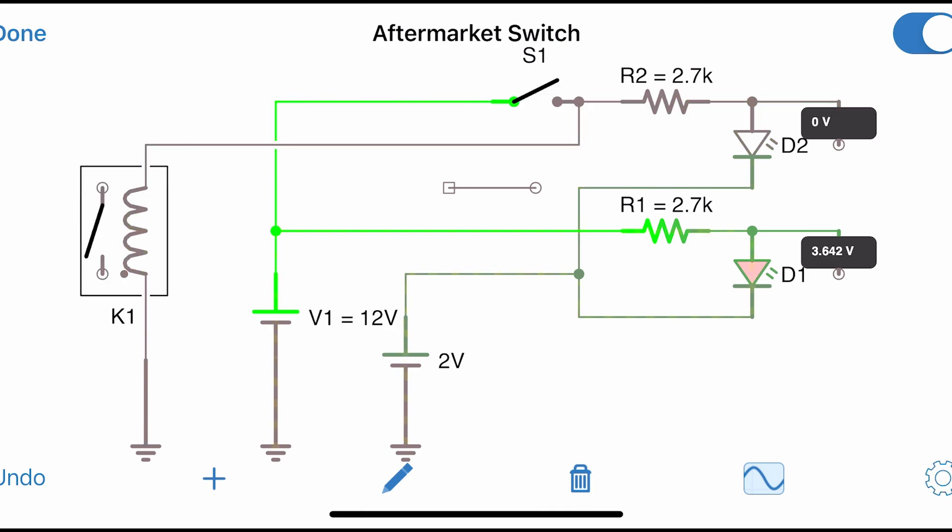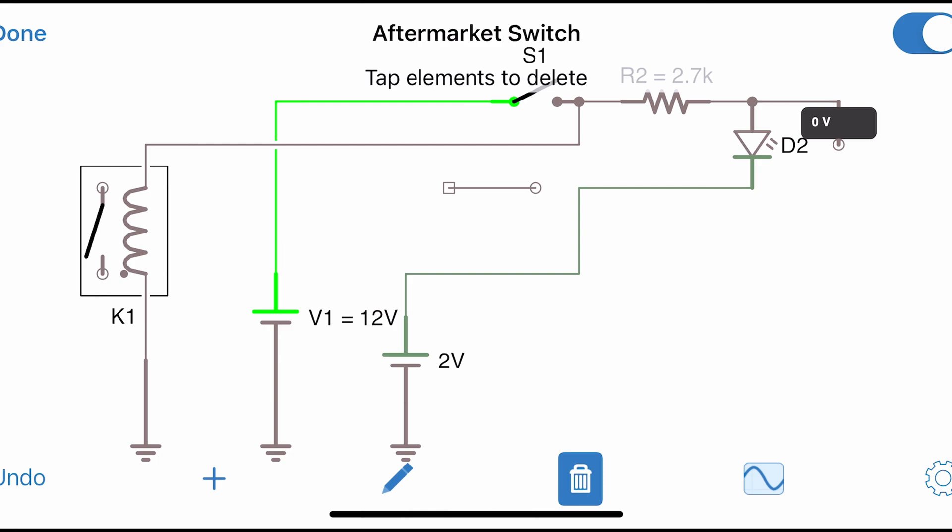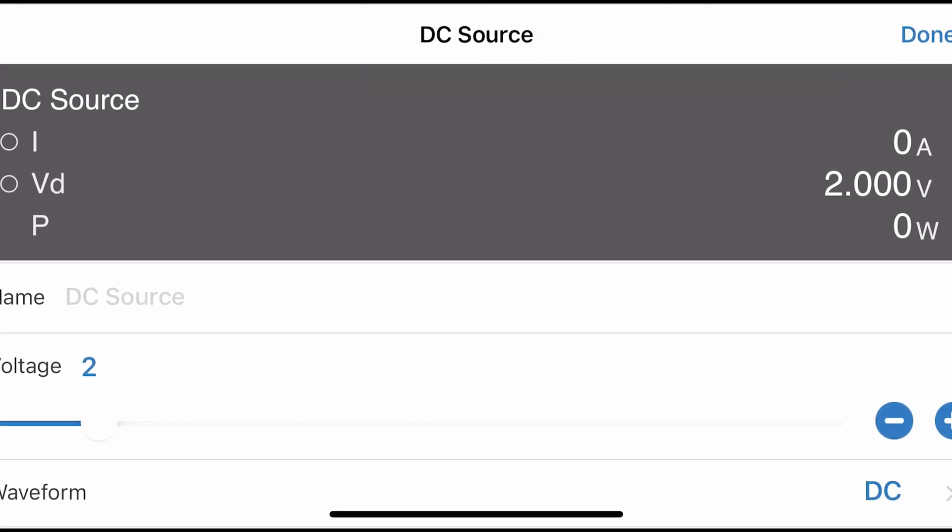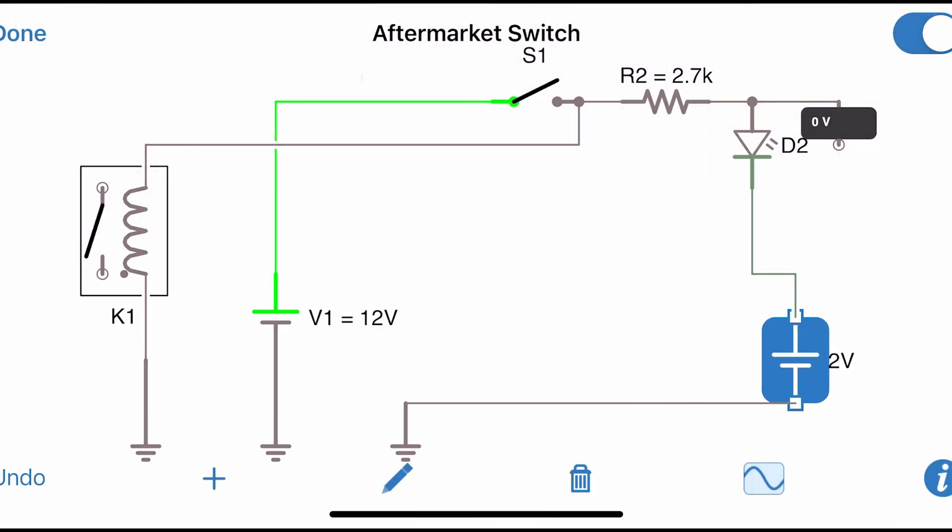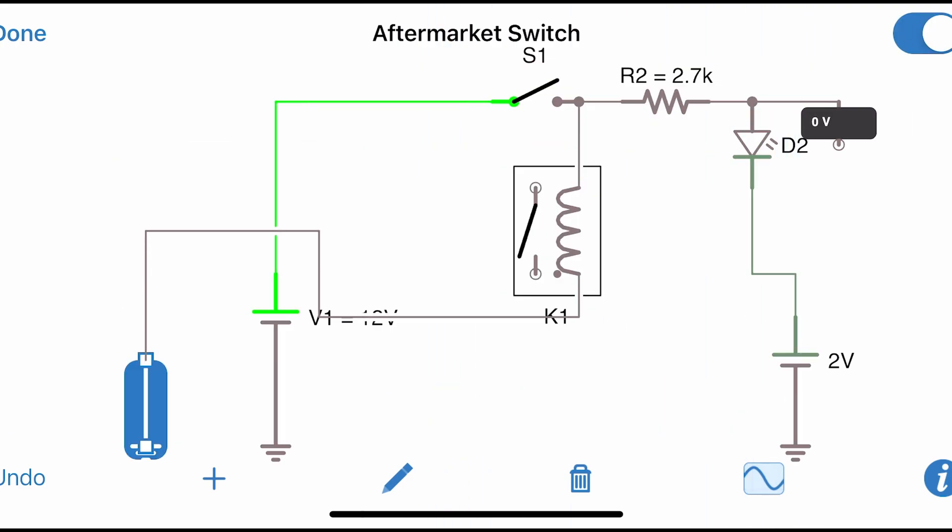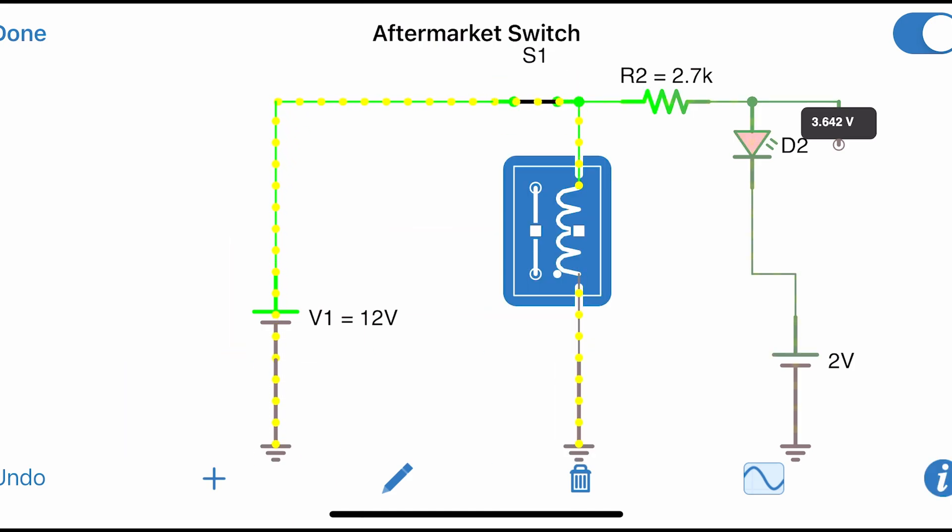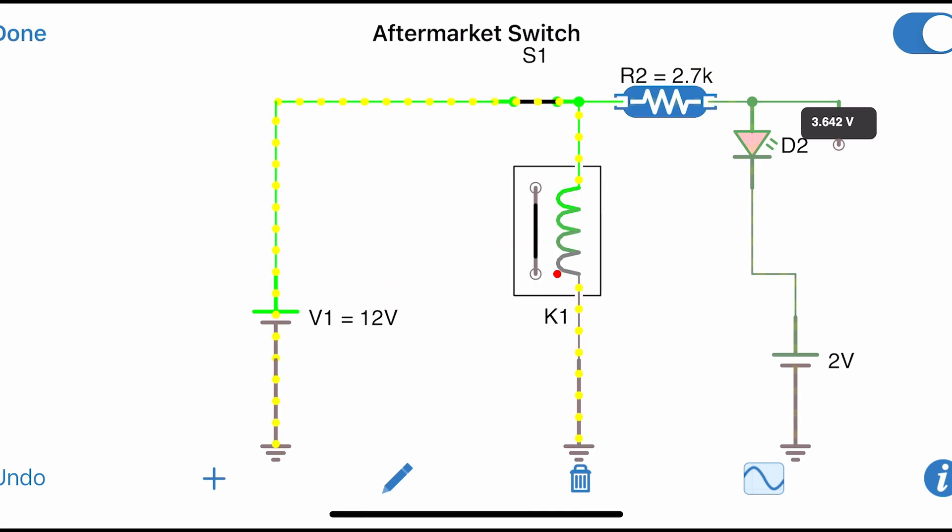So now let's rearrange this and look at it a little bit differently to understand it better. We're going to get rid of that backlighting circuit. We don't need that right now. We're going to move this around, then we're going to move this around a little bit, and we're going to move the relay around. Now when you look at it this way, what do we see is that these two elements are in parallel to each other. The relay, as well as that resistor diode indicator combo, they are in parallel to each other. One's going down this way, and the other one's going out this way.